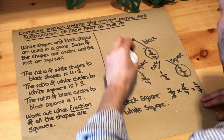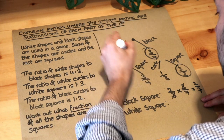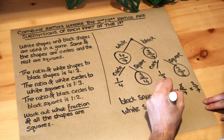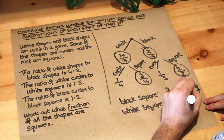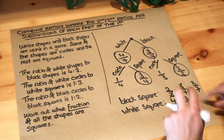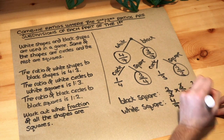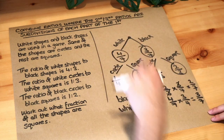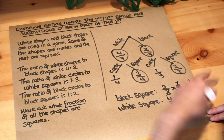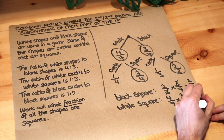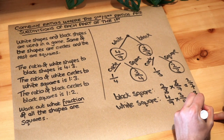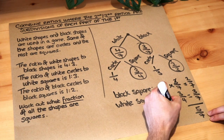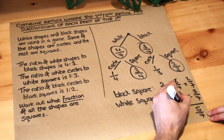For white squares: four-sevenths times three-quarters — the fours cancel — giving three-sevenths. So two-sevenths of all the shapes are black squares and three-sevenths are white squares. Adding these together: two-sevenths plus three-sevenths equals five-sevenths. So five-sevenths of all the shapes are squares, and that is the final answer.